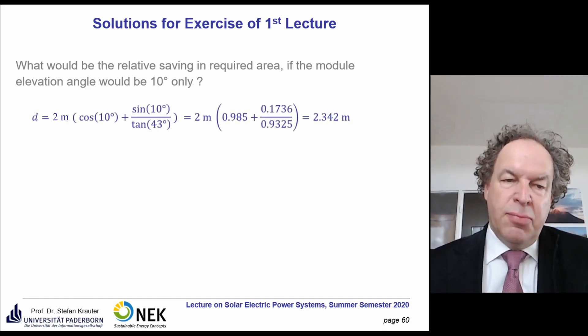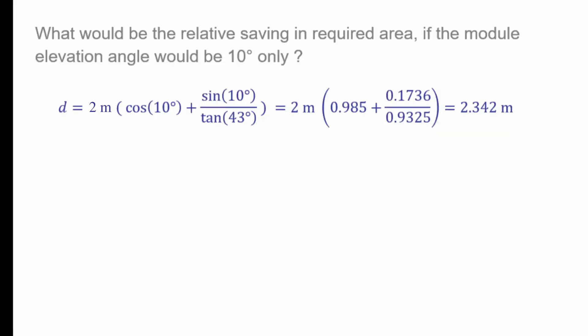So we just put in the number 10 degrees. γ_E is now 10 degrees. If we put that in, we have a distance that we have to keep. If the module is now at 2 meters, then it's 2.342 meters.